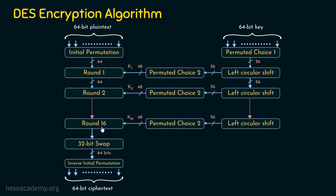After 16 rounds of operation, we get 64 bits, and these 64 bits are given to a 32-bit swap function. Taking these 64 bits, we partition them into a left-hand side 32 bits and a right-hand side 32 bits, and perform a swap. Once the 32 bits are swapped, we again get 64 bits — the left 32 bits move to the right side and the right 32 bits move to the left. So the output of the 32-bit swap function is 64 bits.